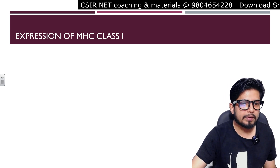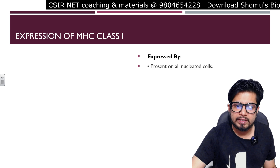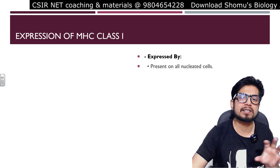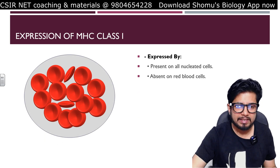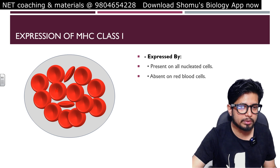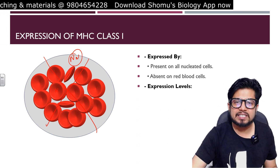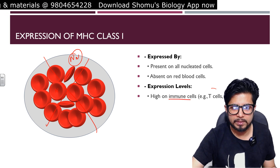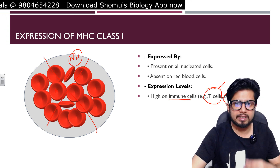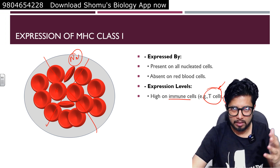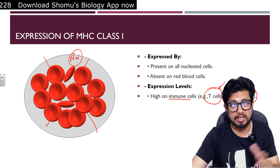Regarding expression, MHC class 1 is expressed by every single nucleated cell of the body. Any cell containing a nucleus can produce MHC class 1, but it is absent in red blood cells because they have no nucleus. Expression levels are very high in immune system cells, especially T cells and dendritic cells. Dendritic cells are professional antigen-presenting cells and can express both MHC class 1 and MHC class 2.